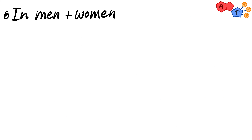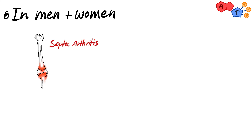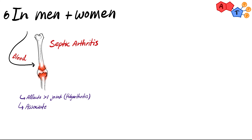In both men and women, Neisseria gonorrhoeae can also cause septic arthritis. This happens when Neisseria gonorrhoeae spreads into the blood and causes inflammation of the joints. Typically, this affects more than one joint, which is why it's called polyarthritis. In addition, the condition is usually associated with skin lesions and tenosynovitis, or inflammation of the muscle tendon sheath.